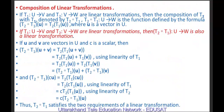Now, composition of linear transformations. If T1 is a mapping from U to V and T2 is a mapping from V to W, both linear transformations, then the composition T2∘T1 is a mapping from U to W defined by (T2∘T1)(u) = T2(T1(u)). We claim T2∘T1 is also a linear transformation.